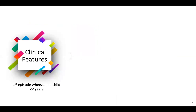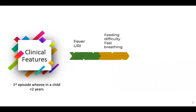When do you suspect bronchiolitis? Anytime you have a baby who presents with the first episode of wheeze and who is less than two years of age, we usually think of bronchiolitis. It will initially appear as a viral infection — low-grade fever and upper respiratory infection leading to feeding difficulty, which may be due to nasal block, and later fast breathing.